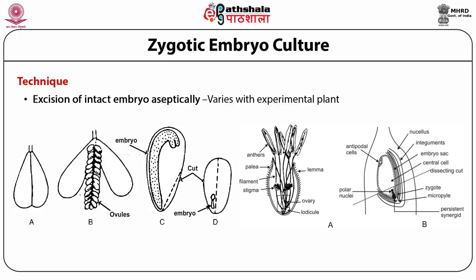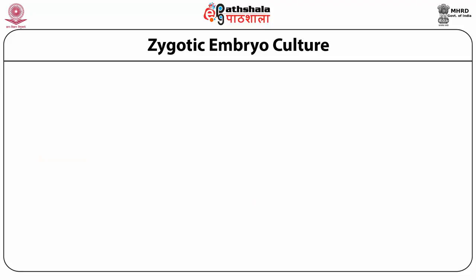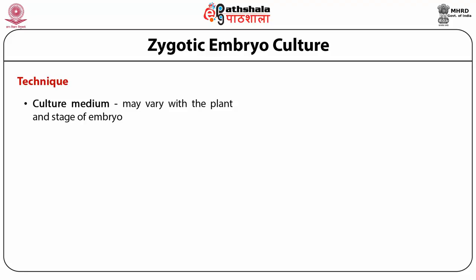In immature seeds, a middle incision can be used to push the embryo out. One has to modify the technique of isolation depending on the species, the structure of the flower, and the position of the embryo inside the seed. Care should be taken that the embryo is not injured and remains aseptic. If excising very young embryos, one may need the aid of a binocular. The second and most important aspect of the technique is the culture medium.